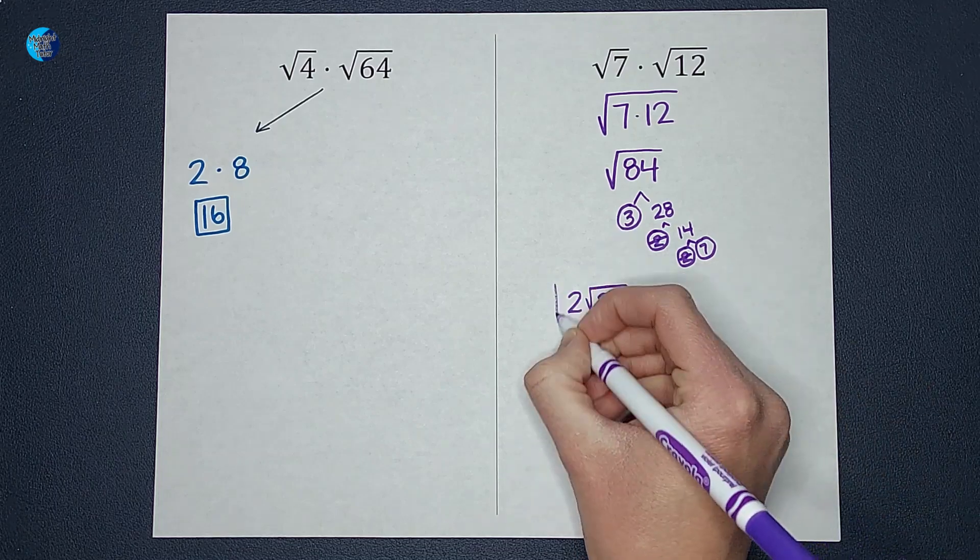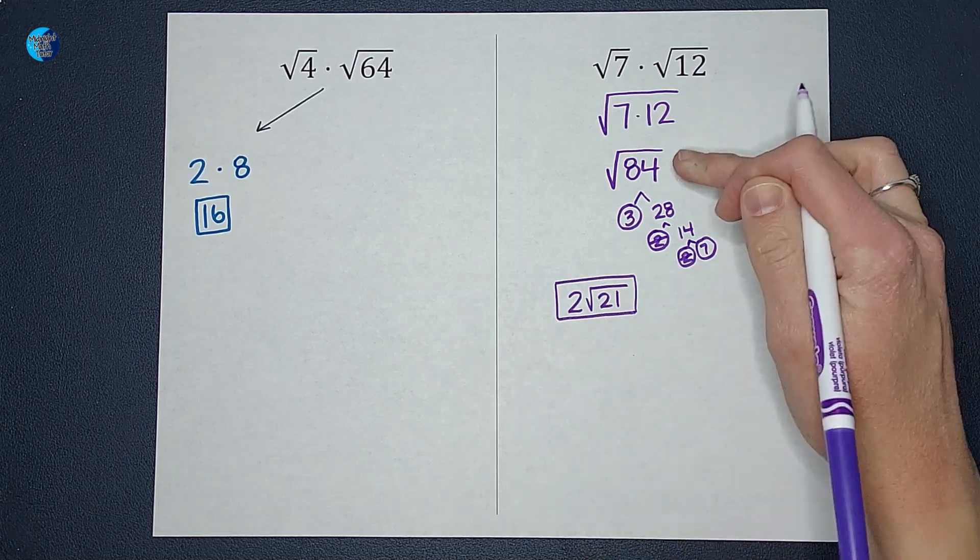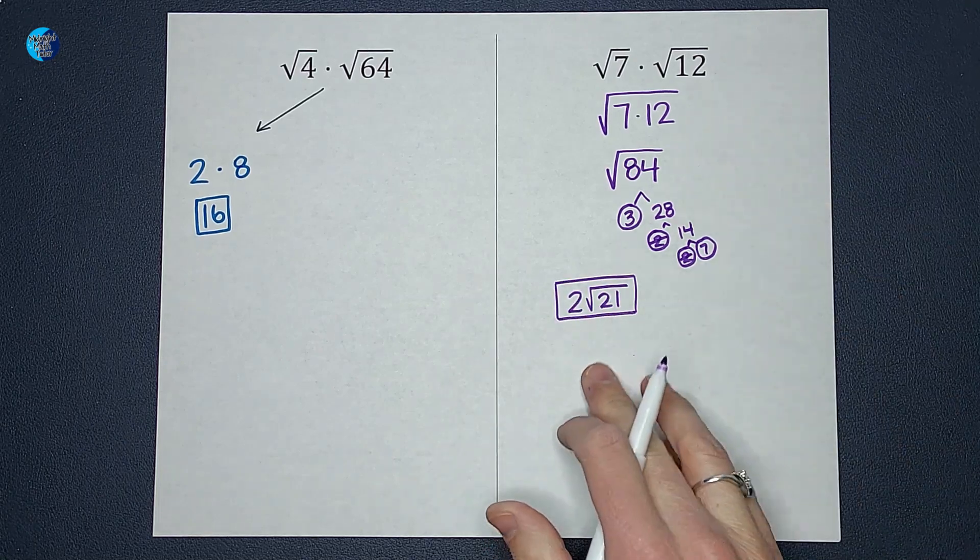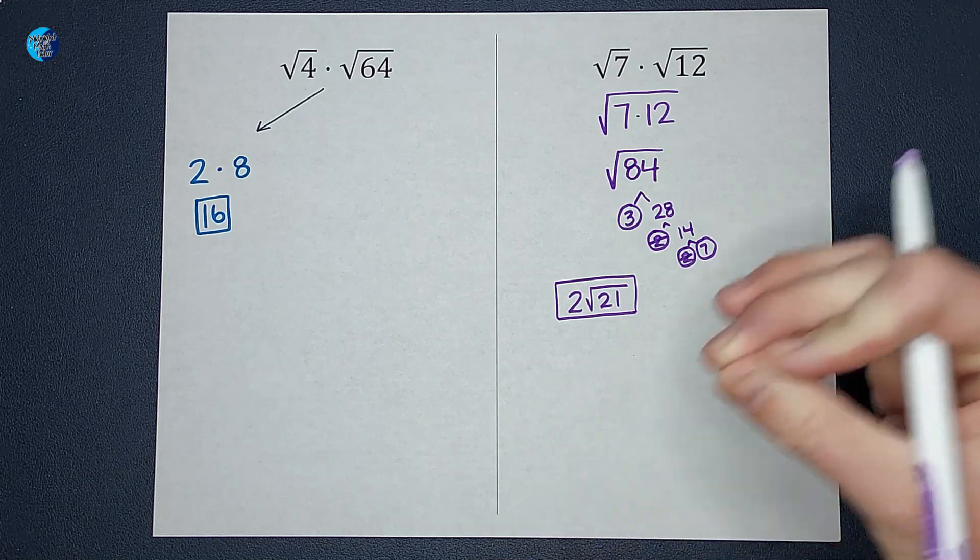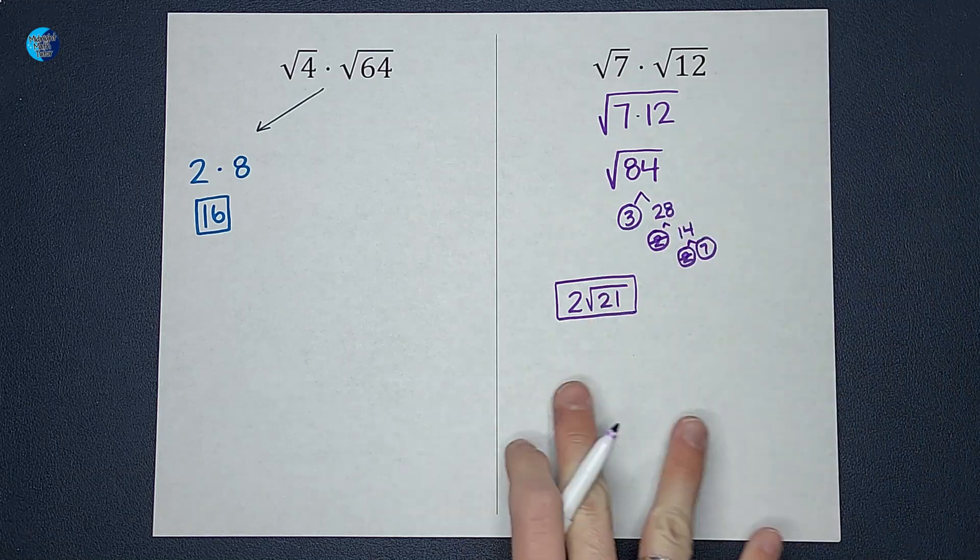So the square root of 84 and 2 square roots of 21, they're the same answer. One is just more simplified.